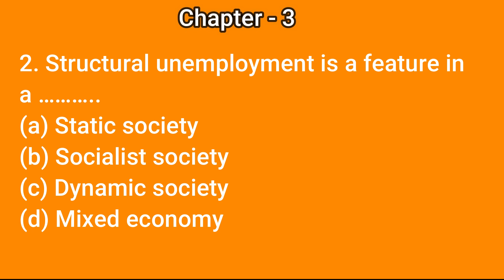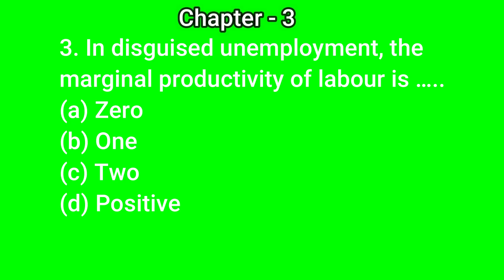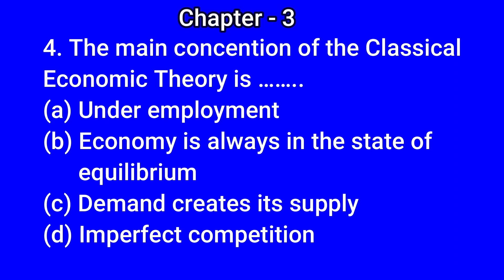...answer is (c) dynamic society. Question number 3: in disguised unemployment, the marginal productivity of labor is — (a) zero, (b) one, (c) two, (d) positive. The correct answer is (a) zero. Question number 4: the main assumption of the classical economic theory is...